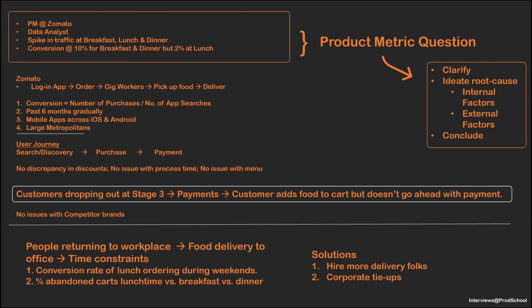In conclusion, Zomato's lunch conversion rate is low compared to dinner or breakfast, and this has been happening because lunch orders generally come from people returning to their work site who are being deterred by the delivery time shown on the payment screen of the Zomato app. To rectify this, Zomato should consider corporate tie-ups inside canteens at corporate office buildings. That sounds like a sound reasoning and approach.